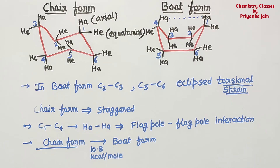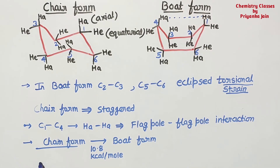This energy barrier is 10.8 kilocalories per mole. At room temperature, 99.9% of cyclohexane exists in the chair form. The boat form is flexible and can be distorted — it can convert to a more energetically stable form called the twisted boat form.